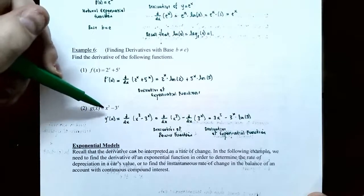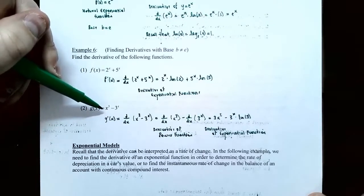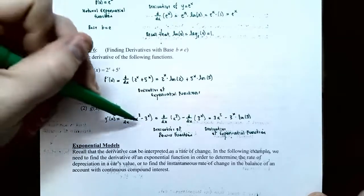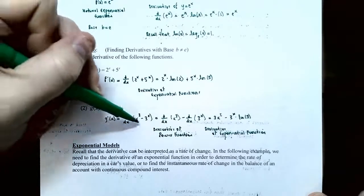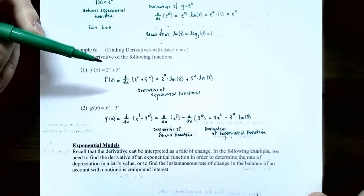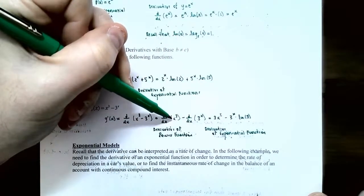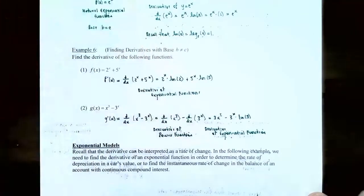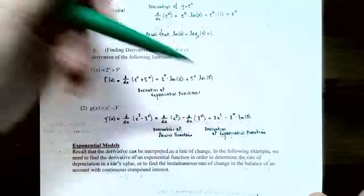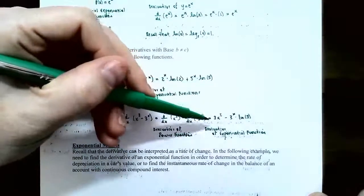Part 2 — g of x equals x cubed subtract 3 to the x. Notice x cubed is a power function, while 3 to the x is an exponential function. Taking the derivative: the derivative of x cubed uses the power rule, giving 3x squared. The derivative of 3 to the x uses the exponential formula, giving 3 to the x times natural log of 3. So g prime of x equals 3x squared minus 3 to the x times natural log of 3.